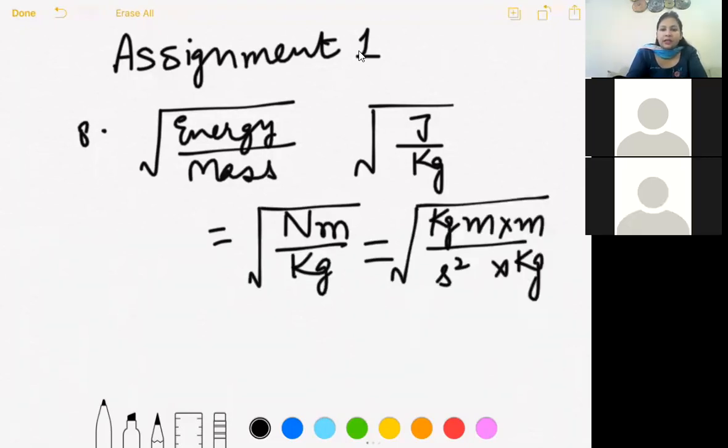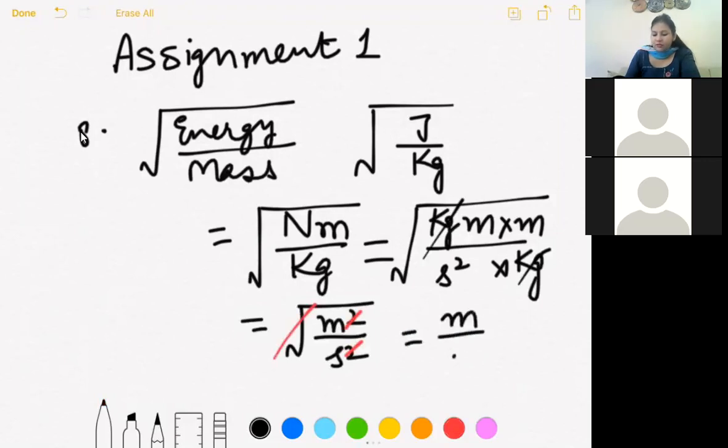Gurjodh is that clear? Then 1 kg gets cancelled. And you are left with under the root m square over second square. Square root ke saath isko cancel out kar dijiye. You are left with unit of speed or velocity. So answer is speed ya velocity ho ga. This is the answer to the 8th question.